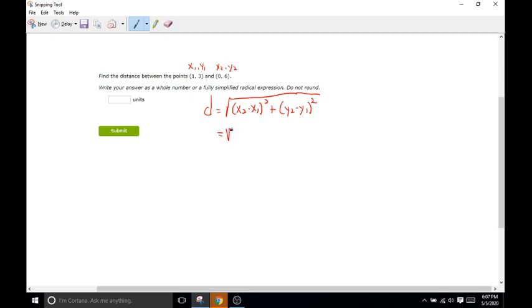So we're going to do d equals the square root of x2 is going to be 0 and then minus x1 is going to be 1 squared plus y2 is going to be 6 and then minus 3 squared. All right. So we have 0 minus 1, which is negative 1 and then negative 1 squared is just going to be 1, right? Negative 1 times negative 1 is a positive 1.